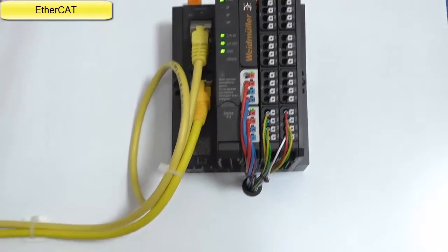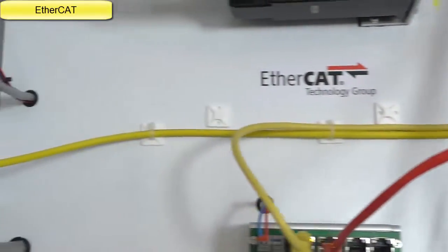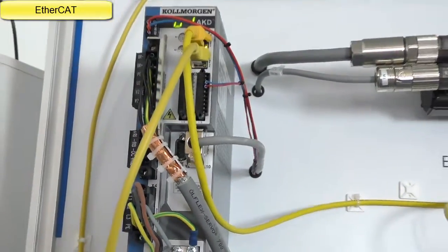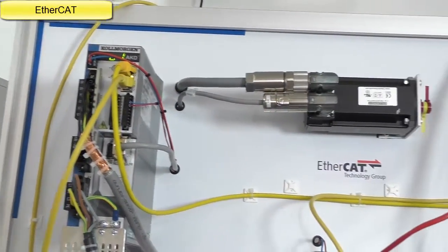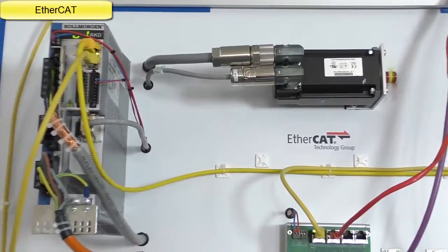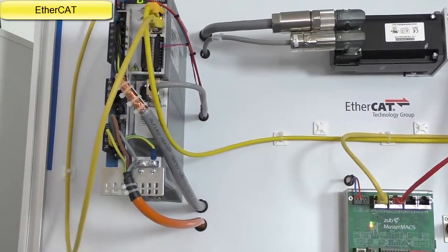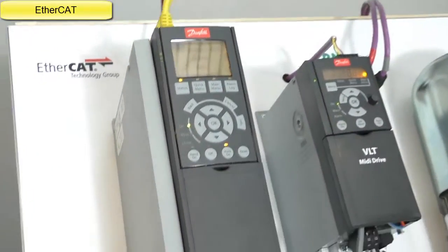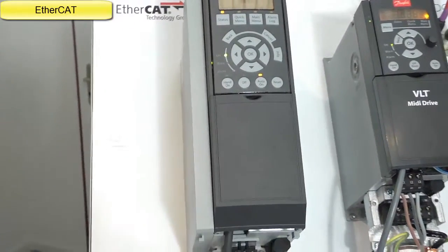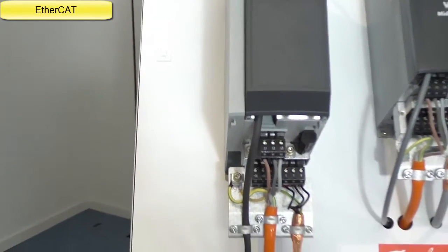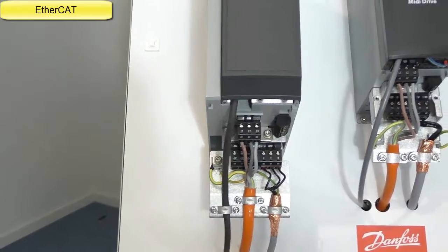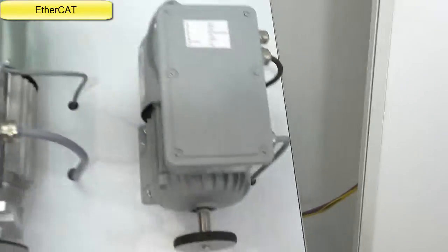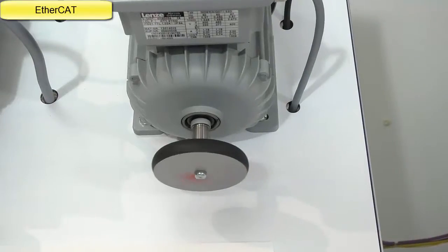From here we follow the line to a Kollmorgen servo drive AKD. Then going over to the next panel where we have connected the FC302 with EtherCAT options and encoder options. This frequency converter drives a normal asynchronous motor.